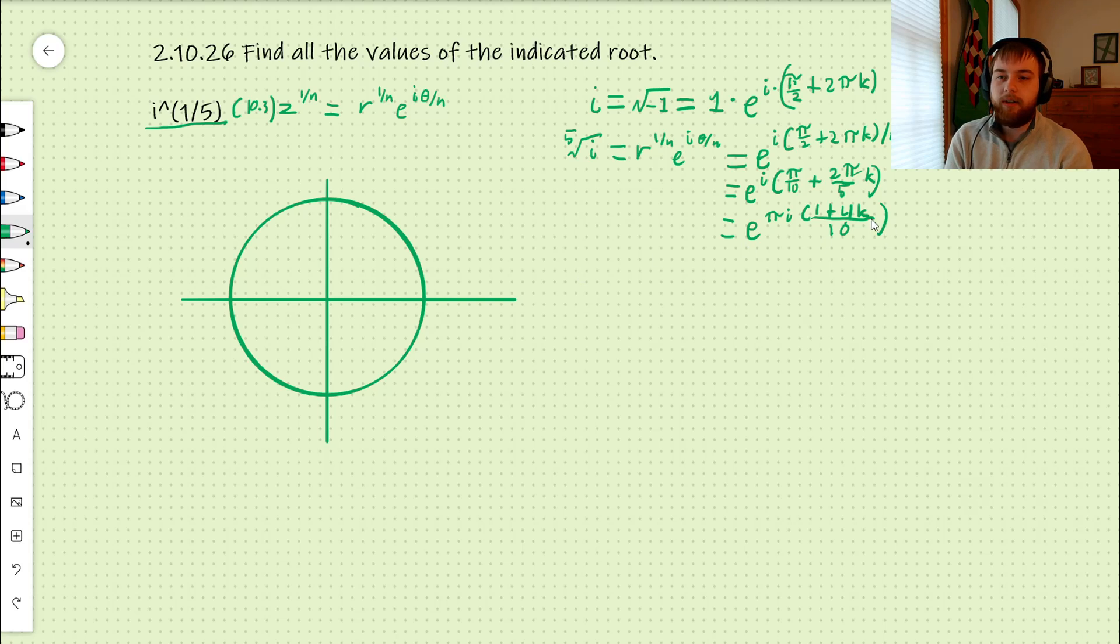So then we just have to do this for different values of our k. Our first value makes this part 1 over 10. So that is equivalent to a 20th of the way around the circle. So this is our first root.